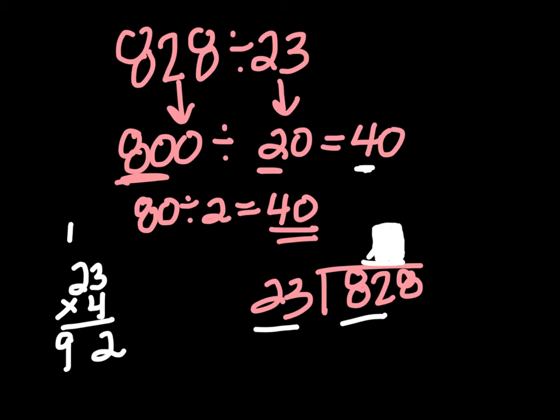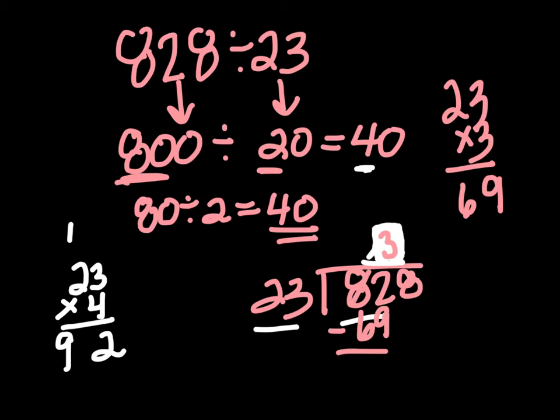So let's go ahead and multiply 23 by 3. We've got 3 times 3, which is 9, and 3 times 2, which is 6. 69 is going to work. So we're going to take 69 and we're going to subtract, which is going to give me 13. Now, my next step, because 13 does not go into 23, my next step would be to bring down my 8 to get 138.